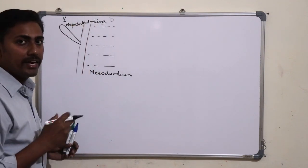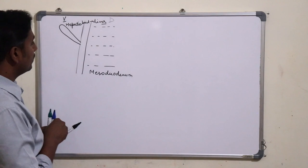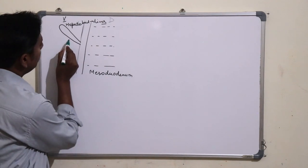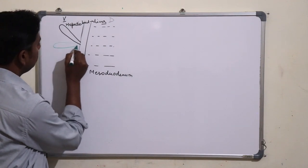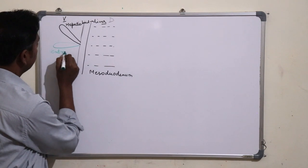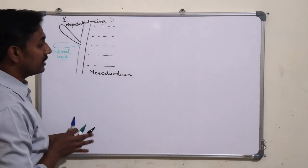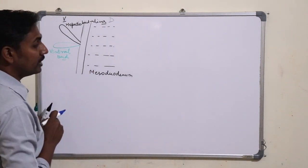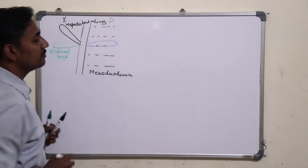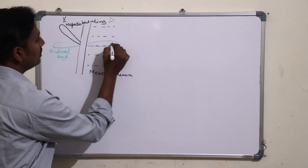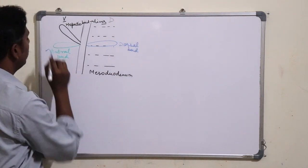Now let us look at where the two endodermal buds — the ventral bud and the dorsal bud — develop. The ventral bud develops in the angle between the hepatic bud and the developing gut, here on the ventral aspect. The dorsal bud arises on the dorsal aspect of the developing gut, just opposite to the ventral bud, in the dorsal mesoduodenum.